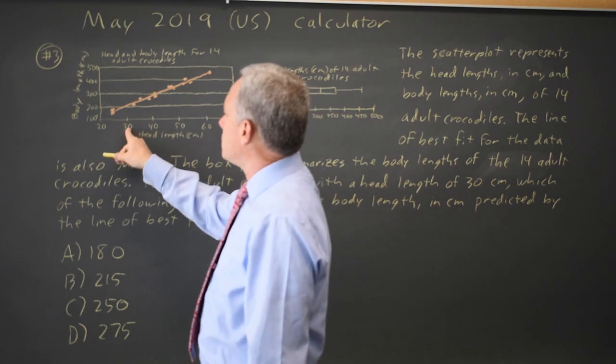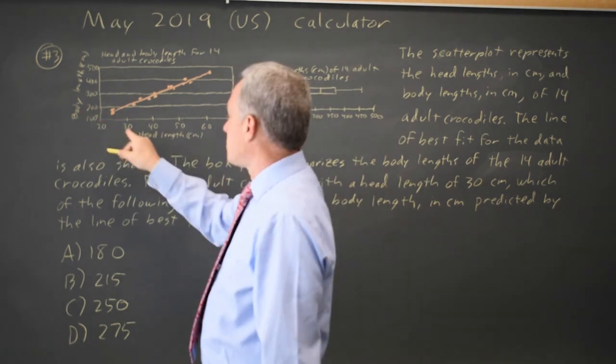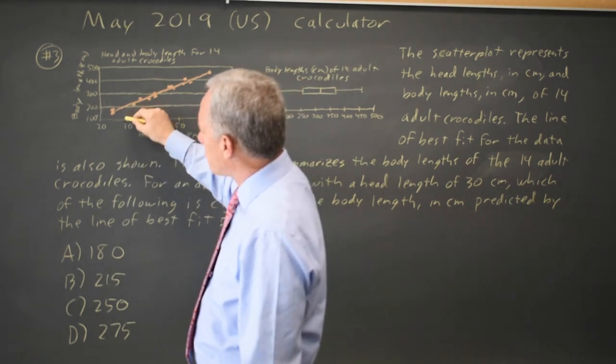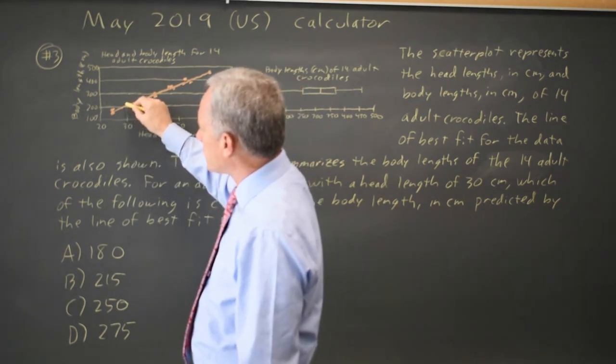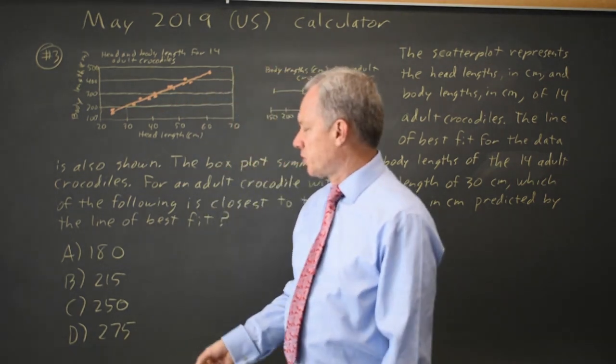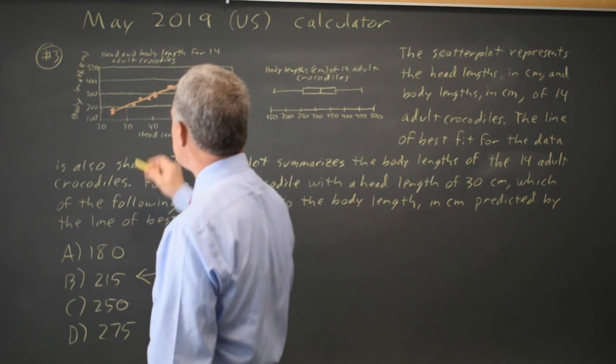So if I go to the scatter plot that relates body length to head length, if the head length is 30, I go up from there to the line of best fit, and it looks like the estimate is just above 200, which would be choice B.